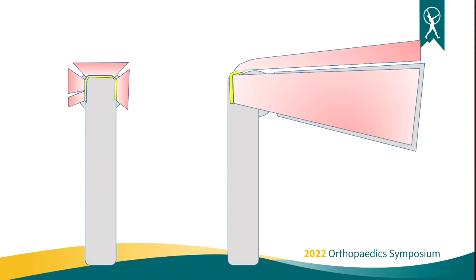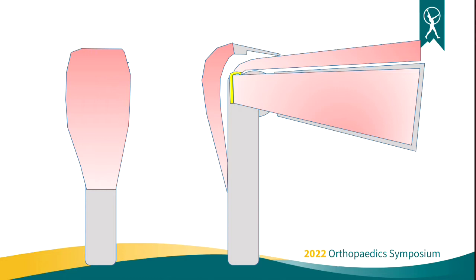On our model, we're going to add our acromion, and then off that acromion comes the deltoid. That deltoid obviously wraps all the way around the front, and we're going to focus on this front view. We're going to leave off the pectoralis and the lat as well, so we're only going to look at these functions of the shoulder.